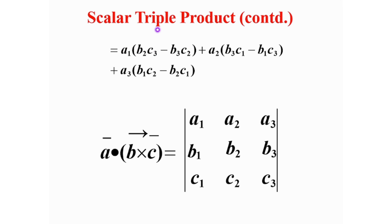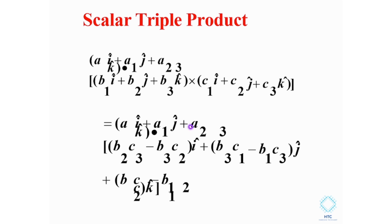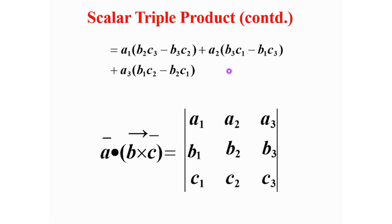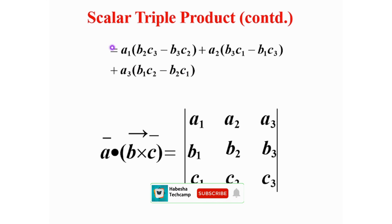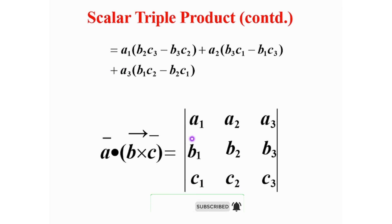A1 is going to be Z. A2 is going to be B3, C1, B1, C3. A3 is going to be B2, and B2 is going to be B2. A3 is going to have a gap in the components. A3 is going to be B2, and the second element comparing B2 and C2 is the scale.